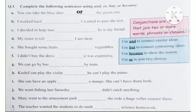Part B is: I worked hard __ I wanted to pass the test. The second part gives the reason for why I worked hard, so we join these two parts using the conjunction BECAUSE. Answer: I worked hard because I wanted to pass the test.